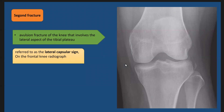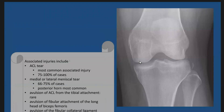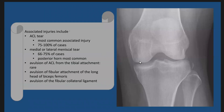What are the associations of the Segond fracture? There are some associations with this avulsion fracture. We have ACL tear, and it is most commonly associated in about 75 to 100 percent of cases.